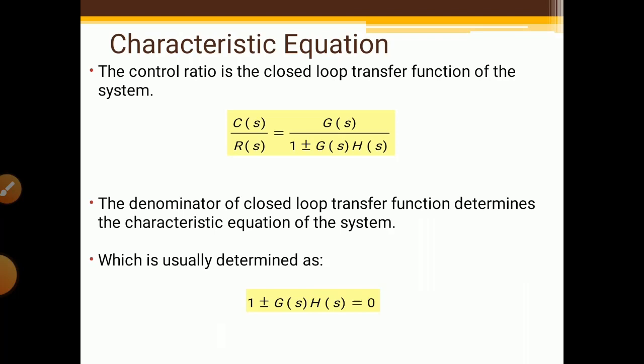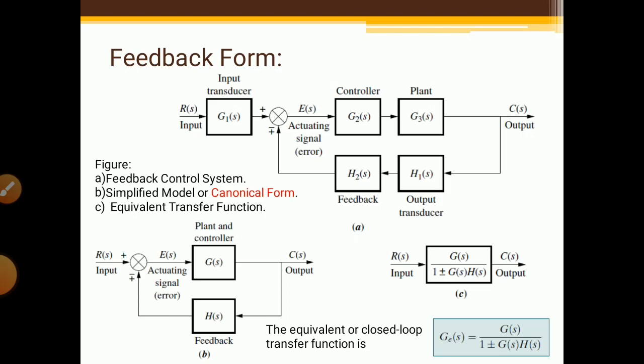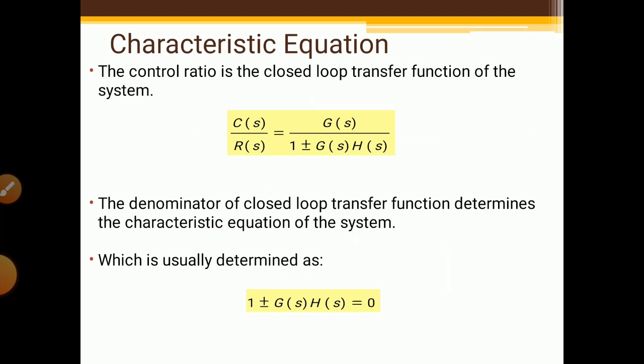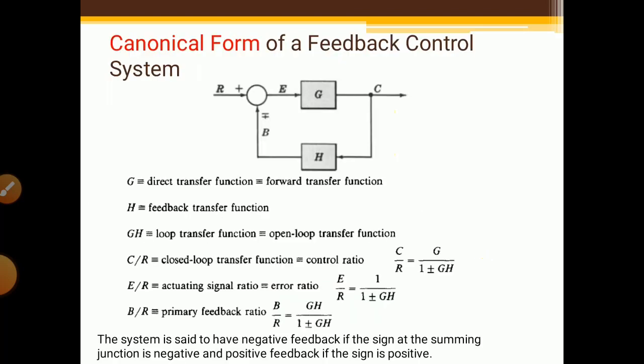The characteristics equation is written from the denominator of the closed-loop transfer function. The control ratio is the closed-loop transfer function of the system. If we want to find out the control ratio, it is the ratio of output upon input — that is, C(s) upon R(s) — which equals G(s) divided by one plus or minus G(s)·H(s). The denominator determines the characteristics equation of the system, which is usually set to zero: one plus or minus G(s)·H(s) equal to zero.